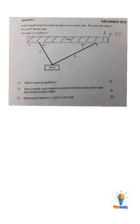Grade 11 vectors. We're going to look at a question like this, where we have vectors in equilibrium. A 250 Newton weight hangs from a beam by means of two inelastic cords, and the cords make angles of 40 and 50 degrees with the beam.